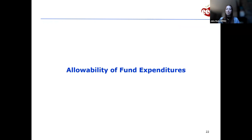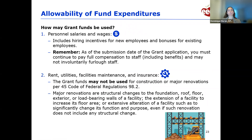Now I'm going to pass it off to my colleague Dominique, who will talk about the allowability of fund expenditures. My name is Dominique, and I'll start the grant compliance section. The requirements we're going to cover come directly from the federal government, so as a recipient of the Child Care Stabilization Grant you're expected to comply with all these requirements. There are seven allowable categories you can spend funds on — this is the complete list, and you can only spend the grant funds on items that fall under these categories.